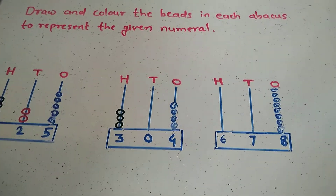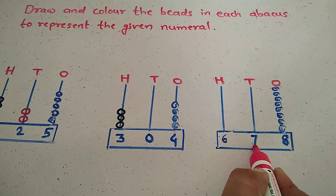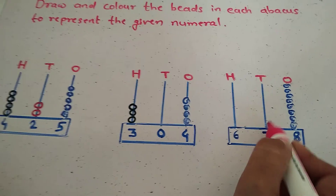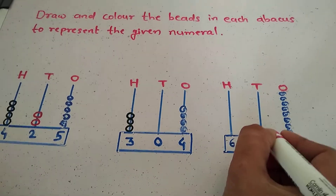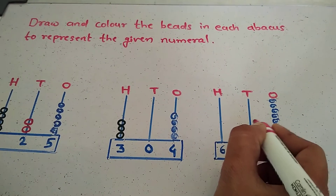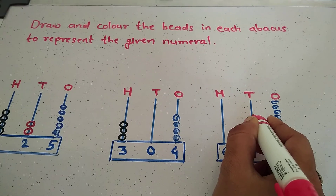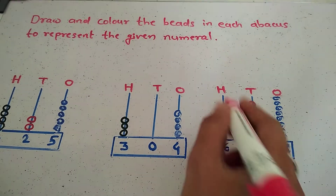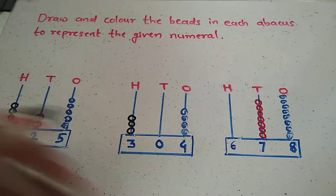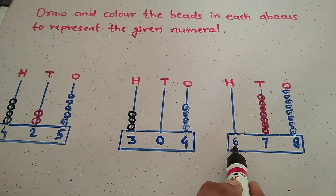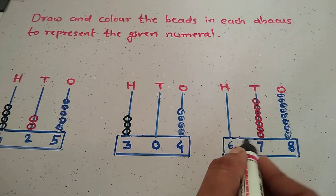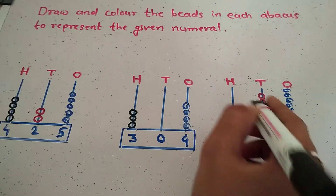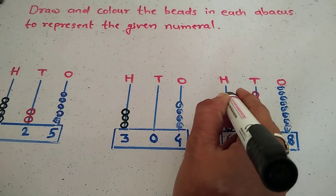Next, tens place. Which number is in the tens place? Seven. How many beads are drawn there? Seven: one, two, three, four, five, six, and seven. Next, tens place. Which number is in the tens place? Six. Draw the beads — six: one, two, three, four, five, and six.